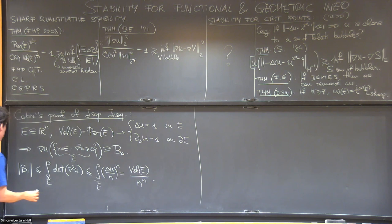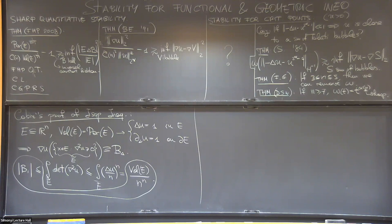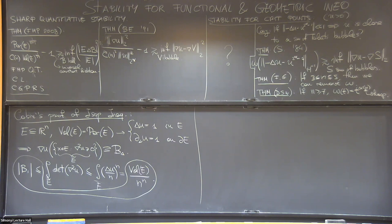And it turns out that this is exactly the isoperimetric inequality. Like under this constraint, this is equivalent to the isoperimetric inequality, which is rather magical. If you don't believe it, because there are some numerology, there's some numerology going on, you can notice that everything is an identity for the balls. So this must be the isoperimetric inequality. And with this, I would conclude. Thank you very much.